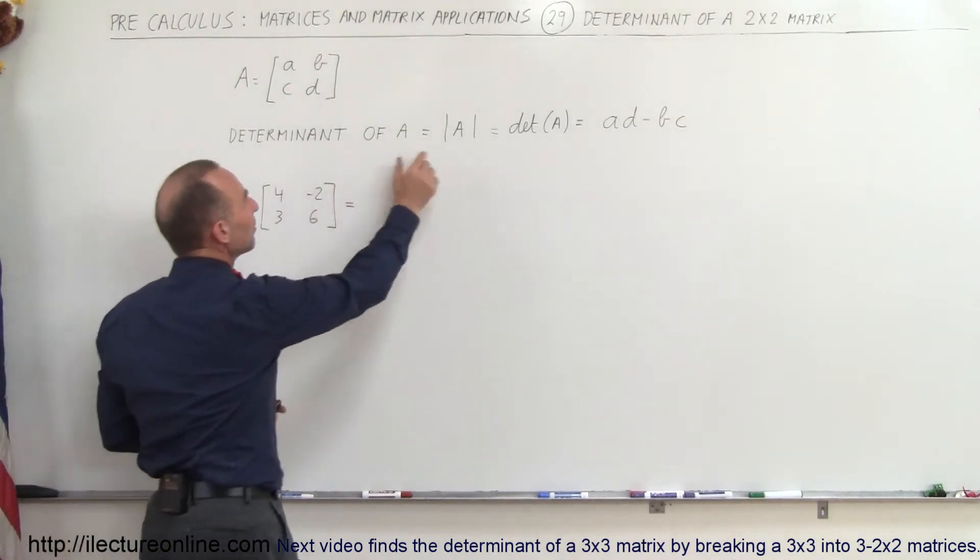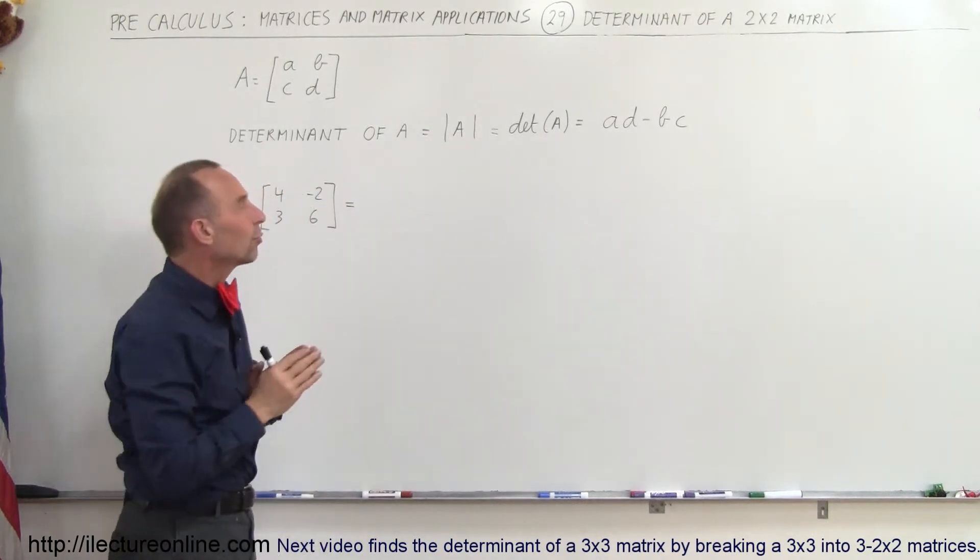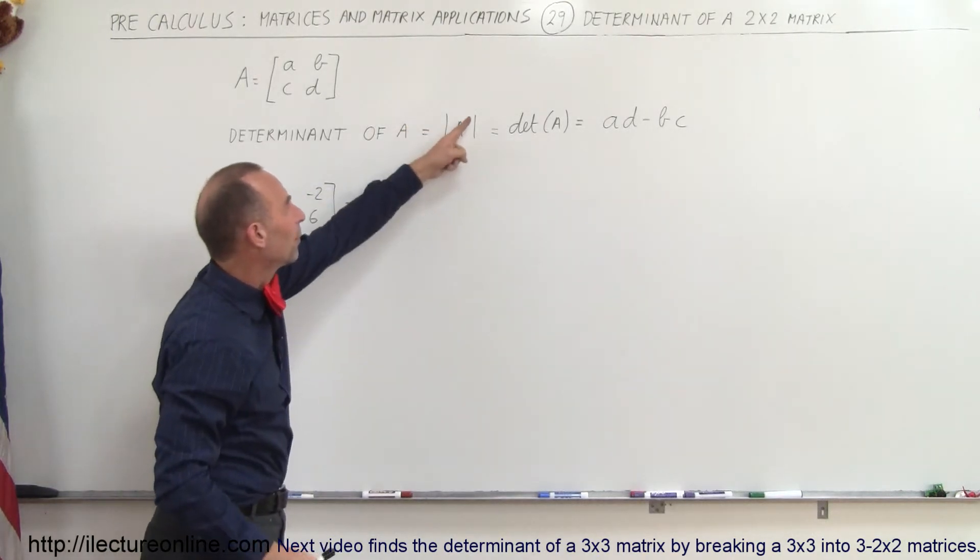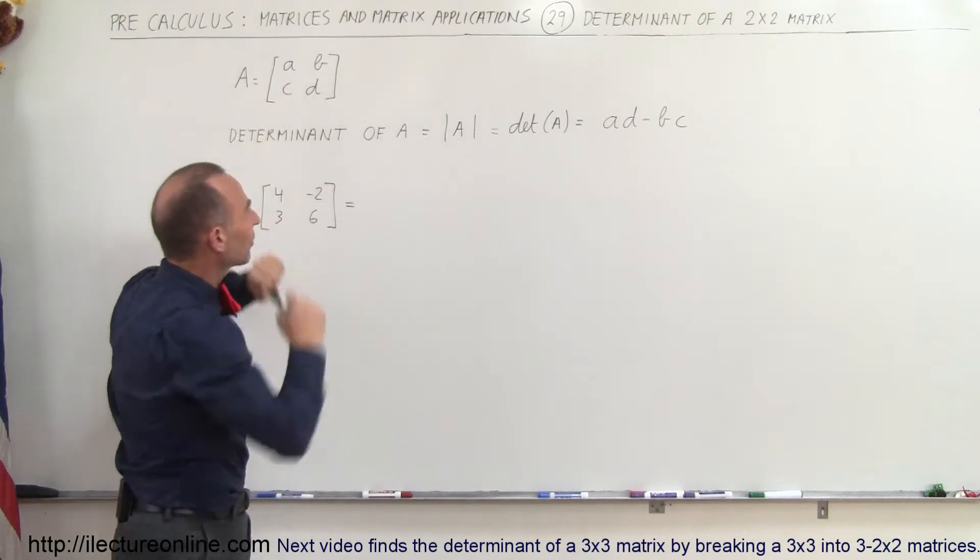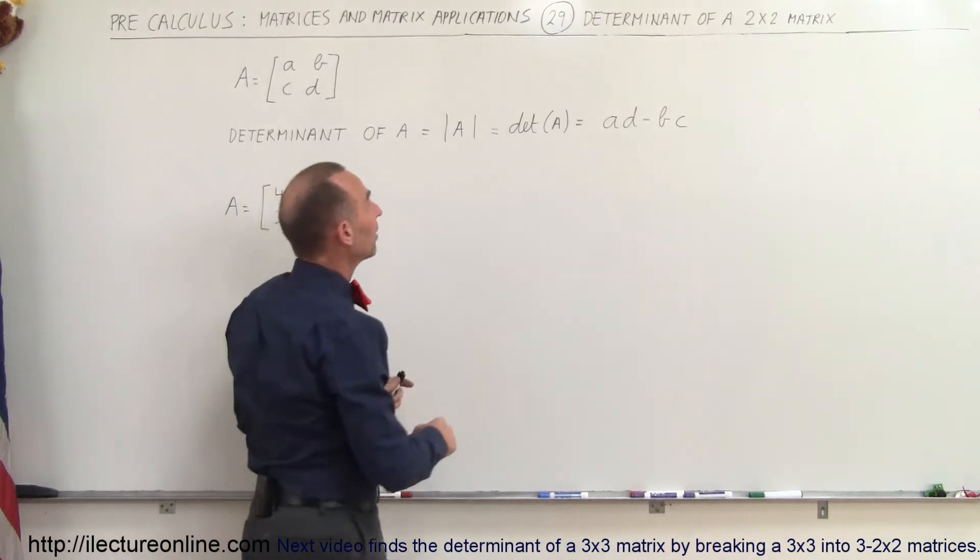So the determinant of A can be written as A with absolute value signs around it, so that's sometimes the way we write it. We don't have the little brackets, we simply have the straight lines like this. We also write it as the determinant of A, and the definition of that is,